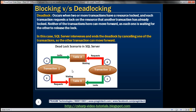Neither of the transactions here are going to give up, so SQL Server intervenes and ends this deadlock by cancelling one of the transactions. For example, if SQL Server cancels transaction 2, whatever exclusive lock it had acquired on table B is released. So transaction 1 is allowed to acquire a lock on that resource and complete successfully, whereas transaction 2 is failed and rolled back.